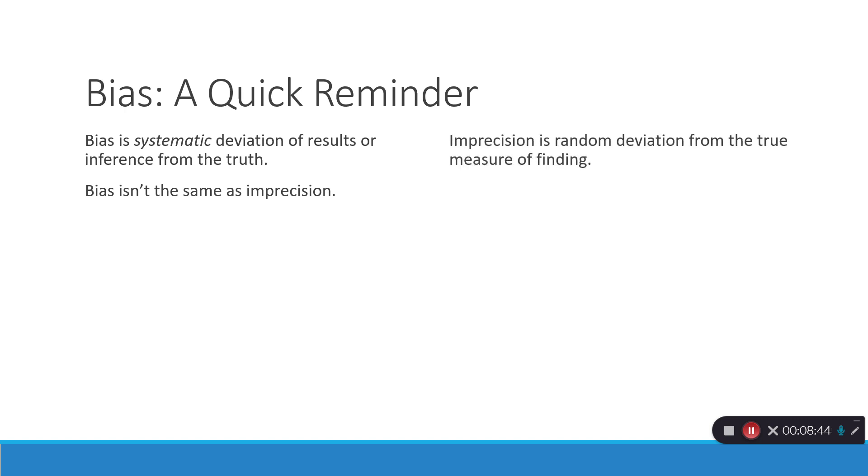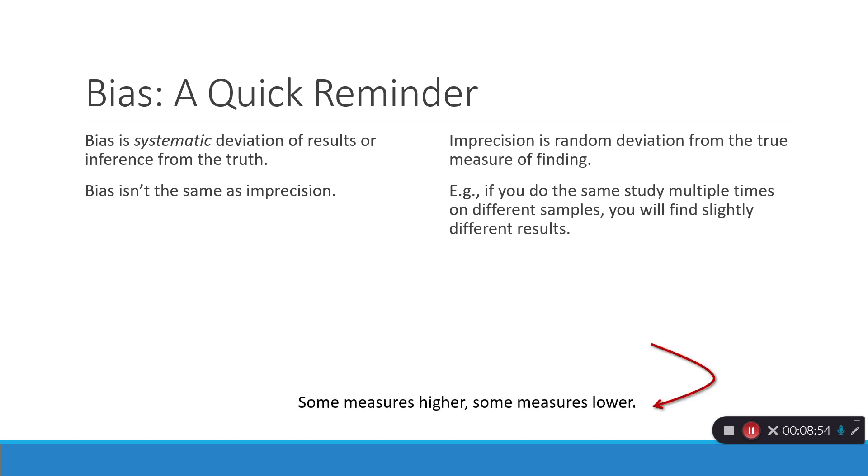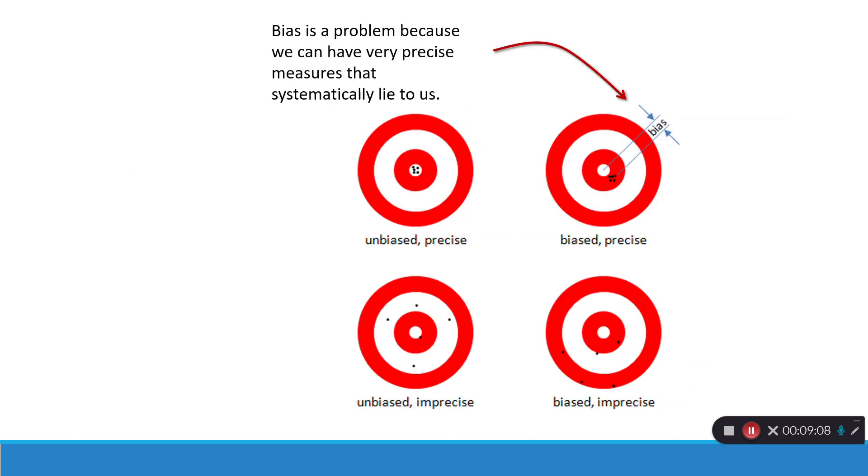Imprecision is random deviation from the true measure of the finding. For instance, if I did the same exact study multiple times on different samples, I would find different results. Some measures would be higher, some would be lower. This is just imprecision, some wiggle or random variation around what the true population measure would be. That's not the same thing as bias. Bias is a problem because we can have very precise measurements that systematically lie to us. And if you see here, all of these points are very close together. Just like in an unbiased, this is unbiased. They're right in the center there. And they're precise. Bias estimates can be precise, but just missing the mark. And that difference there is the bias.